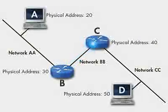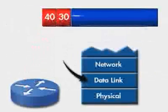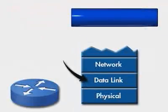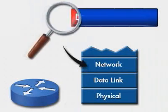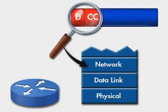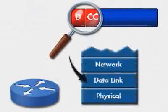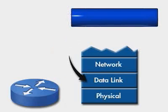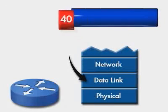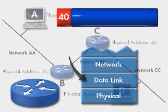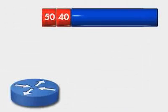The packet then travels to Router C, which receives the packet, strips off the data link layer addresses, and examines the destination network layer address. It recognizes the destination device and repackages the packet at the data link layer. In this example, it appends its own physical address, 40, to the packet at the data link layer. Then it adds the physical address of Computer D as the destination address.